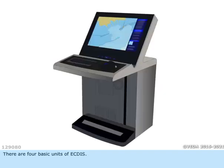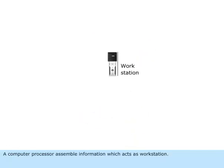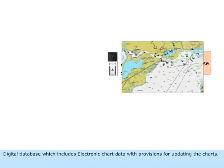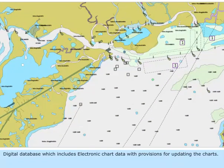There are four basic units of ECDIS. A computer processor assembles information, which acts as a workstation. A digital database which includes electronic chart data with provisions for updating the charts.